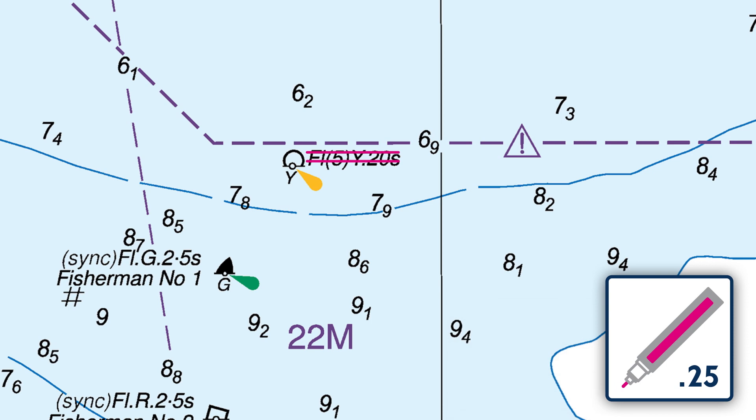Using diagonal double strikethroughs, also delete the buoy, colour and flare.